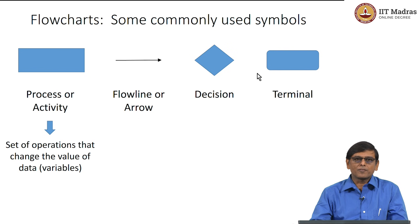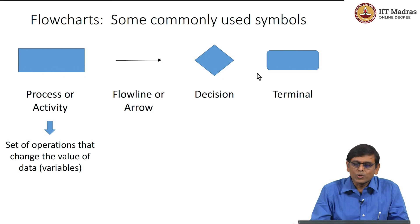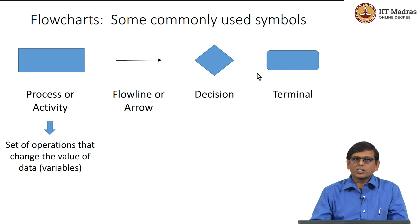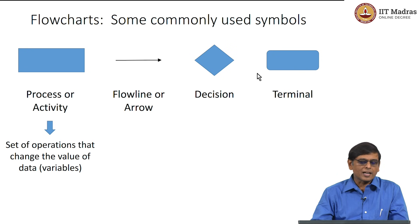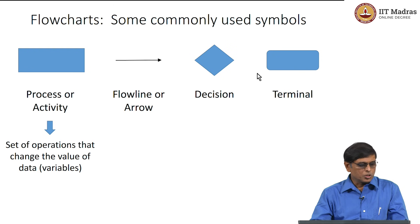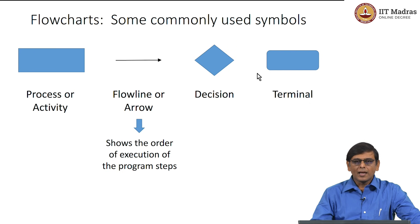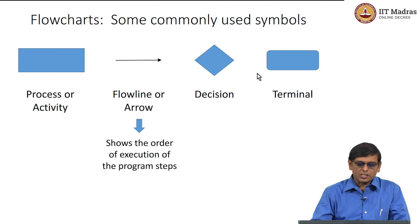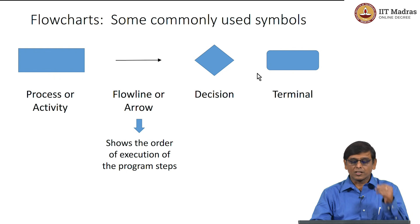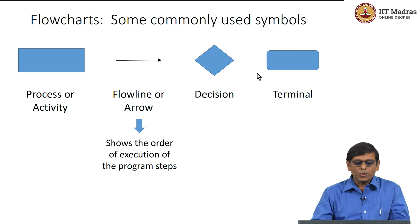In our case we have discussed variables like count and sum. Activities that change the value of a variable like count or sum are written inside this rectangular box, which is called a process. The second symbol is an arrow, and the arrow symbol is basically used to connect the other boxes — that is, a diamond or a rectangle. The arrow shows the order of execution of the program step.